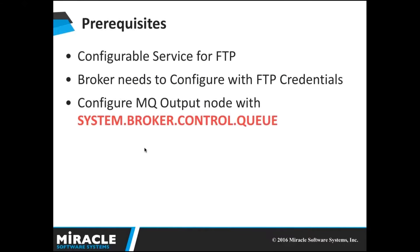Before going to the samples, we need some prerequisites: a configurable service for FTP, and the broker needs to be configured with FTP credentials — this is for handling FTP request data. Second, configure the MQ output node with system.broker.control.queue. In the service, I have used an MQ output node, and for this we need to give the queue name as system.broker.control.queue.